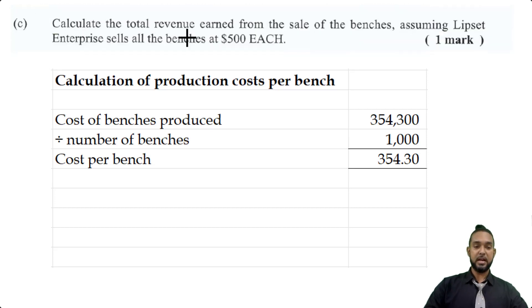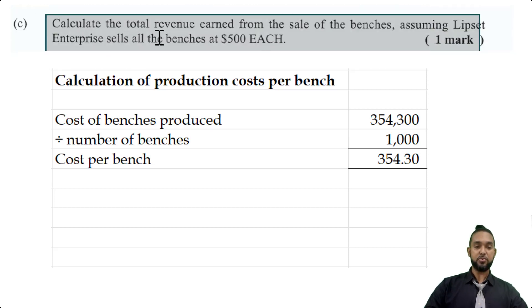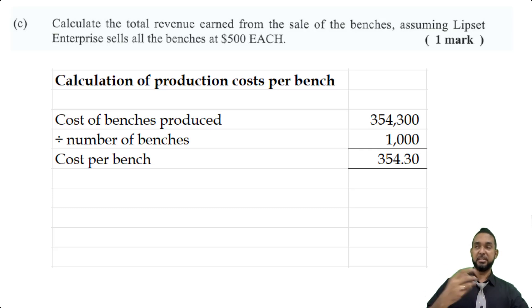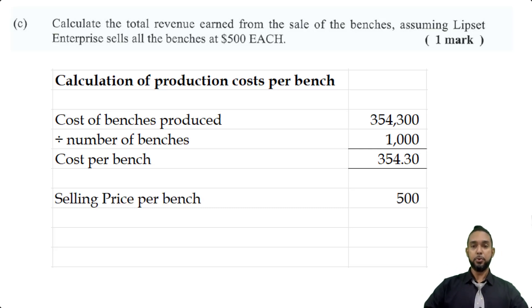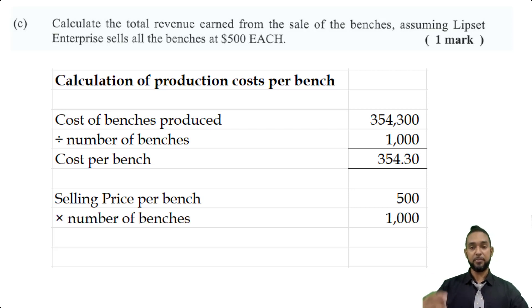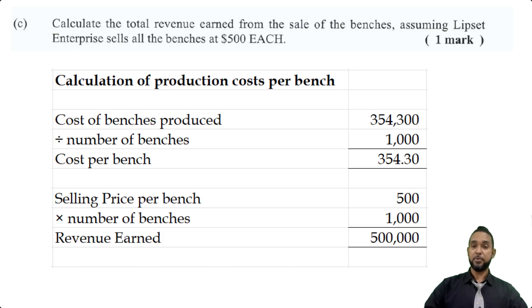Part C asks us to calculate the total revenue earned from the sale of the benches, assuming Lipset Enterprise sells all the benches at $500 each. Total revenue is price multiplied by quantity: selling price of $500 multiplied by 1,000 benches equals $500,000.